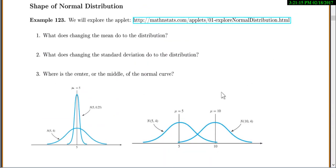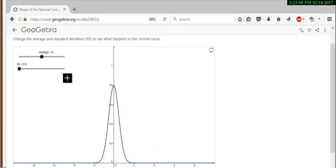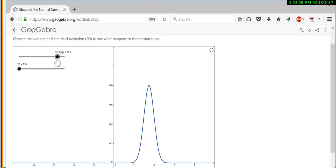First, let's look at an applet for it. My applet link didn't work, so I made a different applet. On this applet, you can see this is the normal curve. We have a slider to change the average, and we have a slider to change the standard deviation. I'll just drag my average, and watch what happens to my curve. As my average gets higher, my curve moves to the right. As my average gets lower, my curve moves to the left. So the average just kind of moves your curve back and forth, left and right.